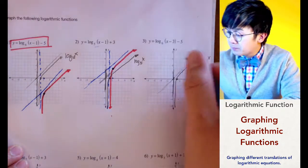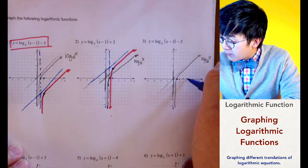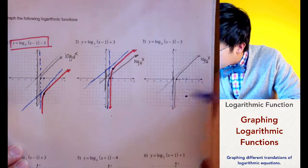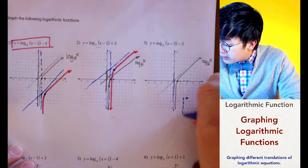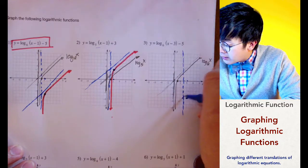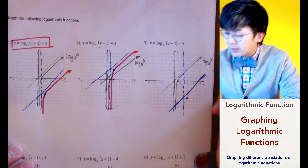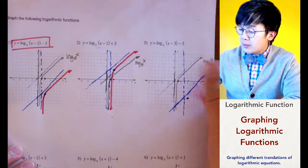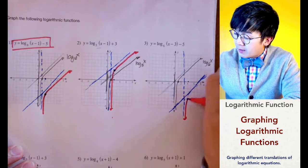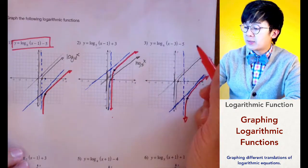Let's now work with our translation. x minus 3, so we move 1, 2, 3 to the right, and then 5 up. So the new point of inflection is here. Our vertical asymptote is 1 unit to the left of the point of inflection, and our slant asymptote would be 1 unit from the top of our point of inflection. This would be our graph for log of x minus 3 to the base 6 minus 5.